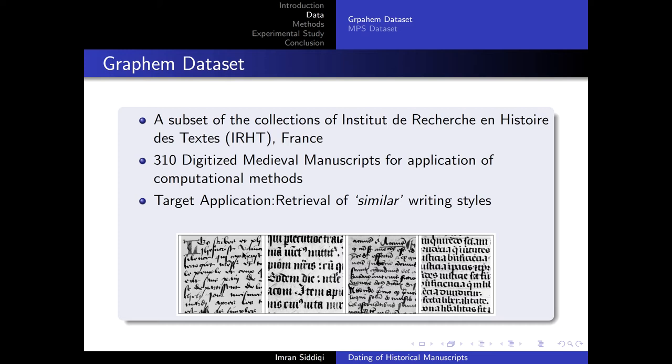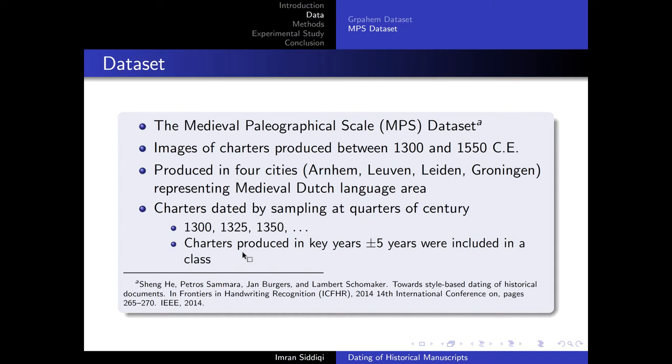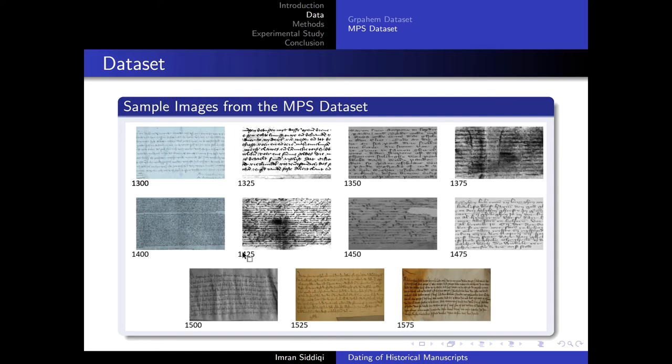For the data, we primarily worked on a set of around 300 images. These were provided to us within the framework of this project. Basically for this project, the target application was more of a retrieval framework, just like it was presented in the previous presentation. They were not too much interested in the quantitative results, but a retrieval application where you provide an image as a query and you have to retrieve a hit list of all similar writings. Then since we were also interested in finding quantitative results and we needed some baseline with which we can compare, we also used the MPS dataset thanks to Lambert and his team that they made it available for us. So it has around 3,000 charters and they are actually grouped into clusters and the dates, they are separated by quarters of a century with a margin of plus minus five years. These are some illustrations from the dataset, which is divided into 11 key years.